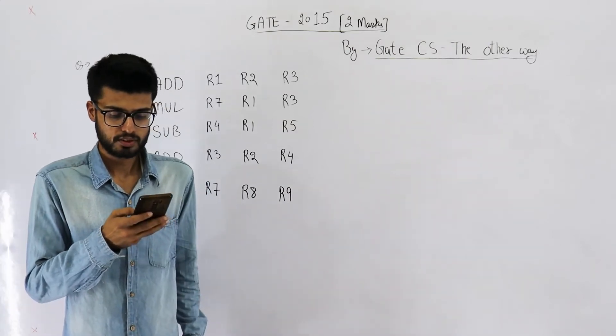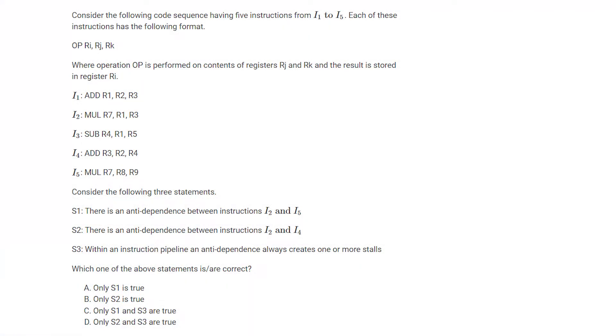Consider the following code sequence having five instructions from I1 to I5. Each of these instructions has the following format. Operation OP RI RJ RK where operation OP is performed on the contents of register RJ and RK and the result is stored in register RI.